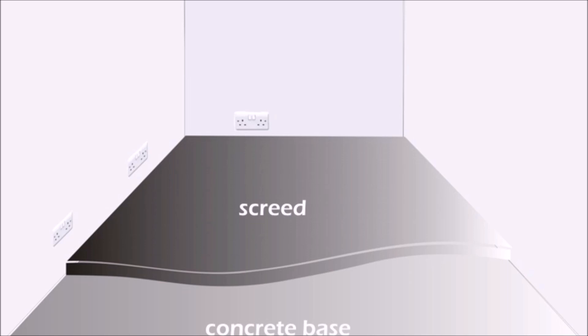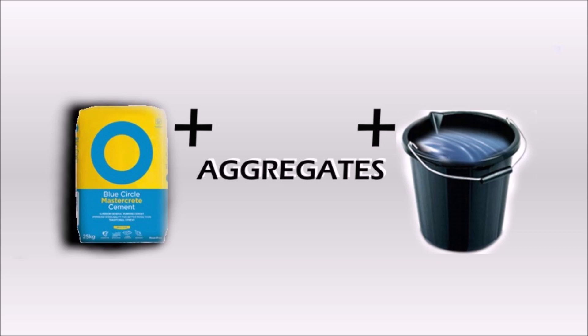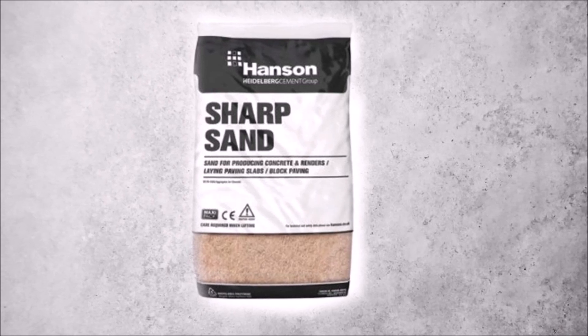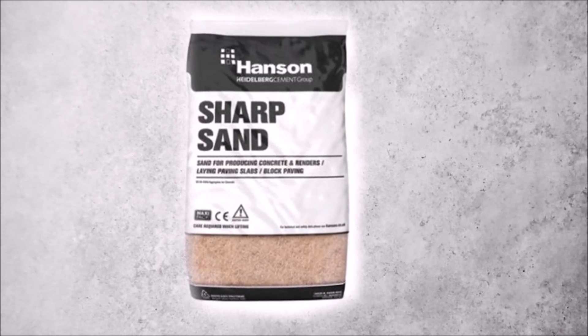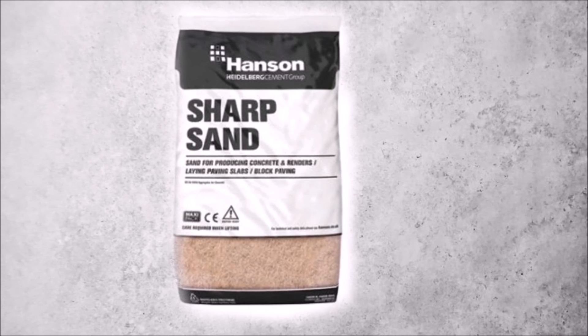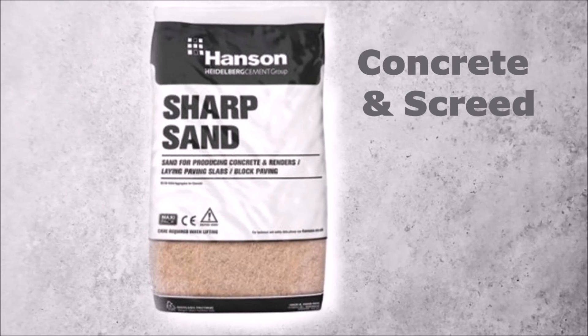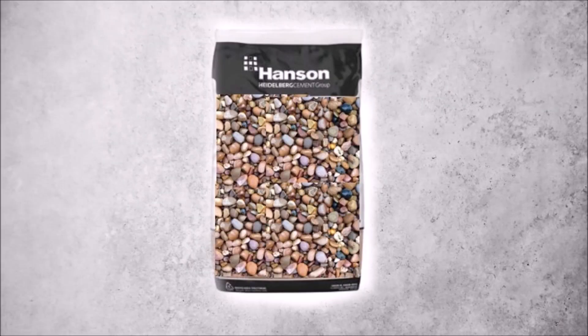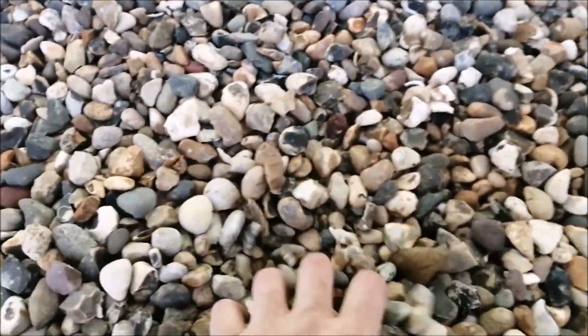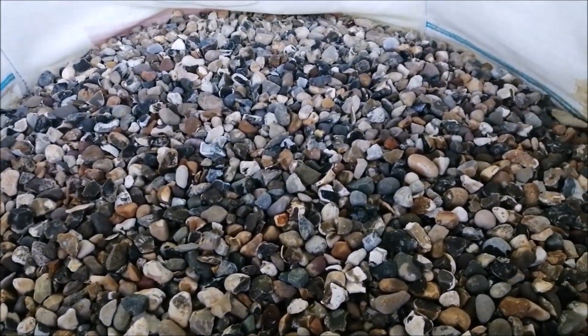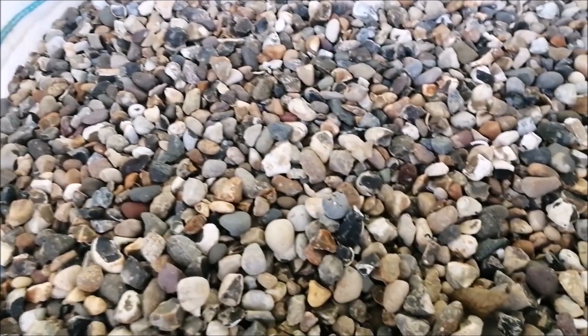To mix concrete or screed, you need to mix cement, aggregates, and water. The cement and water are the same; just the aggregates differ. Here is sharp sand, also called grit sand or river sand, which is more coarse than building sand or plastering sand. This is used for concrete and screed. Here is a sample of gravel, nothing else just little pebbles 10 to 20 millimeters in diameter. You need to add them to the concrete mix, and this makes the concrete stronger.